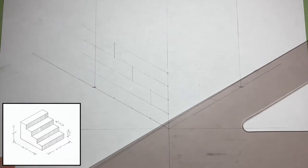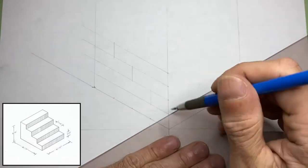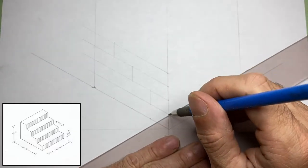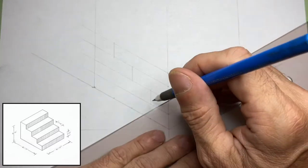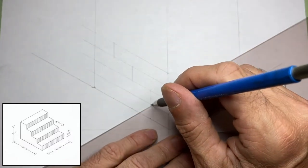Now I'll use my t-square and triangle, and I'll draw thirty-degree lines to the right at each corner. I'll just run these lines long for now.